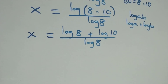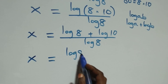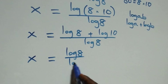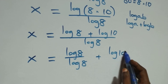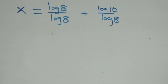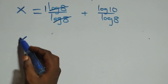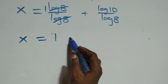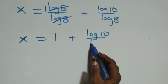We separate this into two fractions: x equals log 8 over log 8, plus log 10 over log 8. Log 8 over log 8 cancels to give 1, so x equals 1 plus log 10 over log 8.